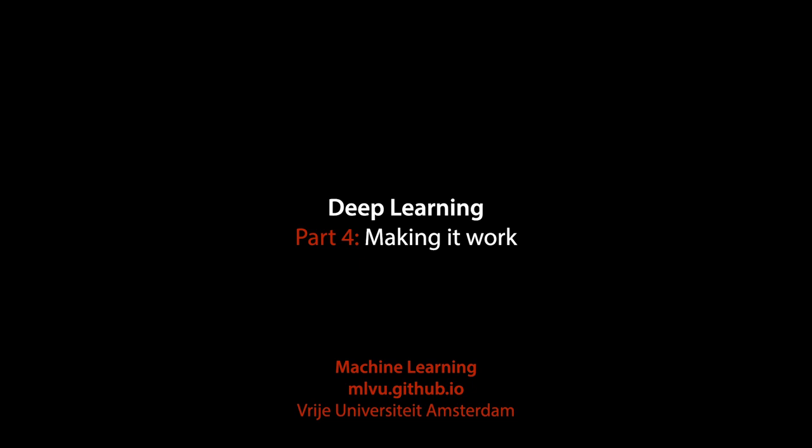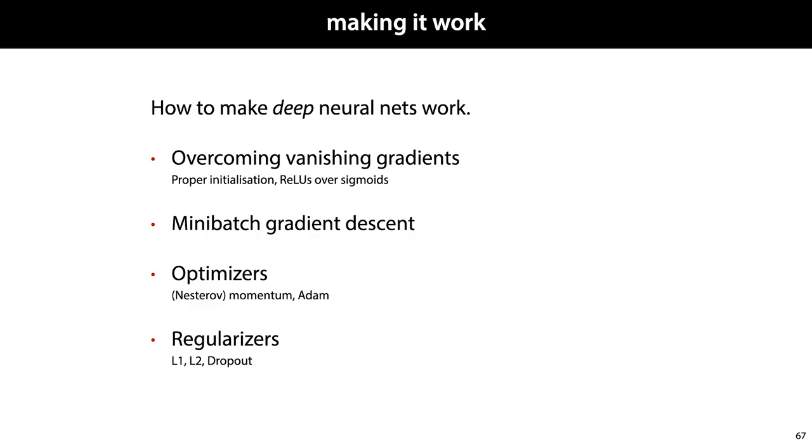In this video, we'll look at the most important tricks you need to make deep learning work. These are the main categories: we need to deal with vanishing gradients, discuss mini-batch gradient descent, discuss optimizers which are small variations on gradient descent that help it work better on large models, and look at regularizers.